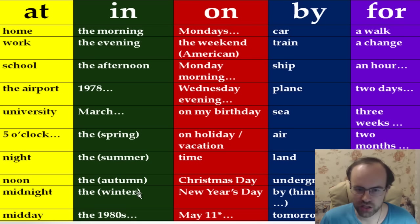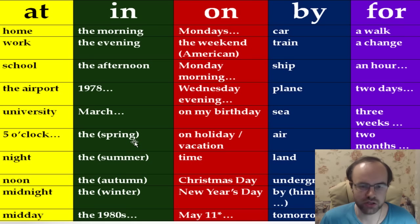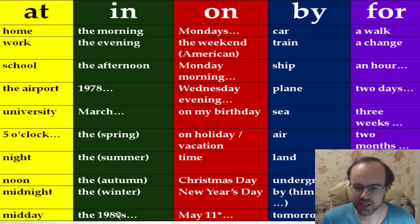We also use 'in' with seasons. Students often ask whether to say 'in spring' or 'in the spring' — both are correct. You mostly see it without the article: in spring, in summer, in autumn, in winter. But with 'the' is also possible. Next: in the 1980s, in the 1970s, in the 1990s, and so on.